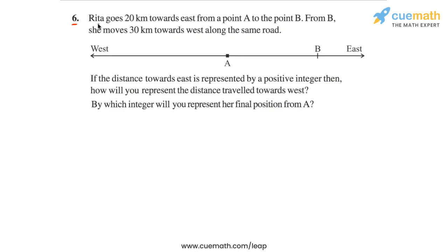Question 6 says: Rita goes 20 km towards east from a point A to the point B. From B, she moves 30 km towards west along the same road. We are also given a figure as part of the problem.